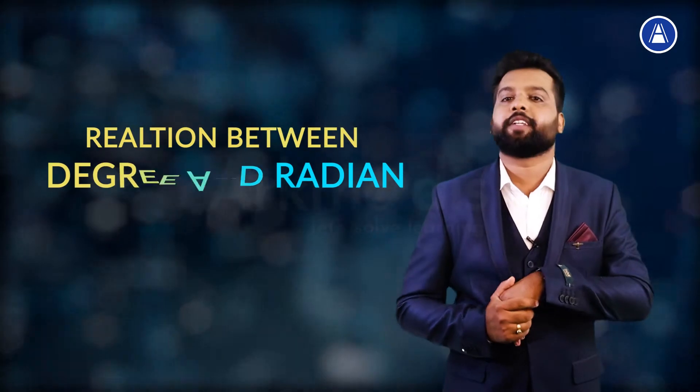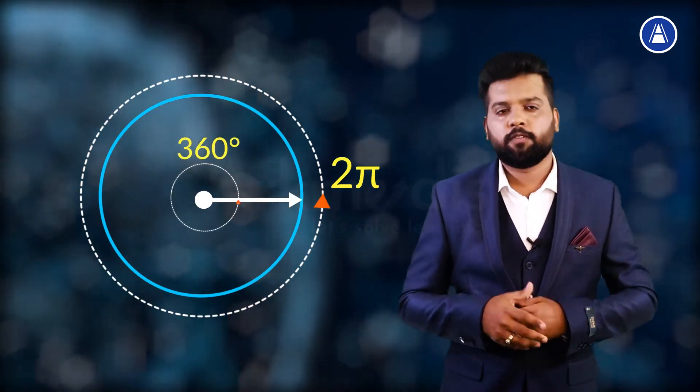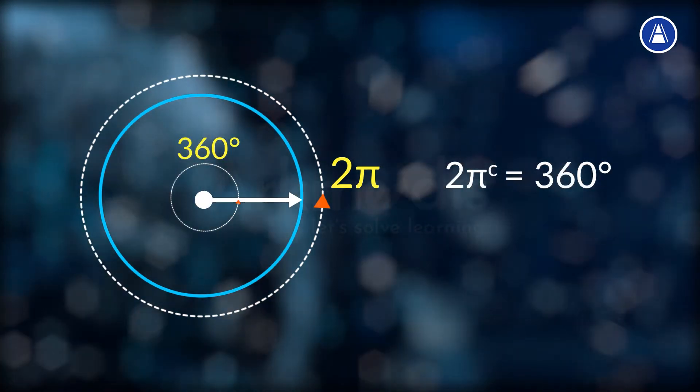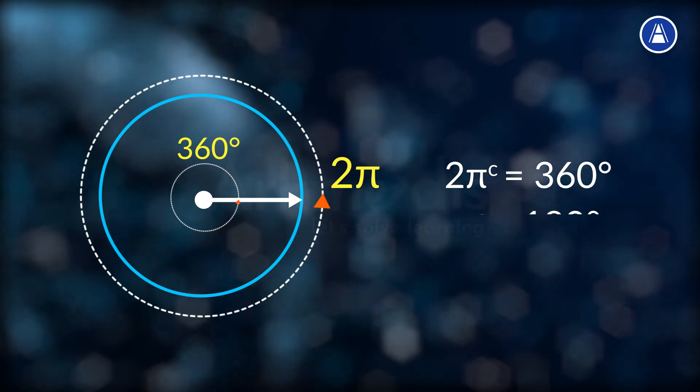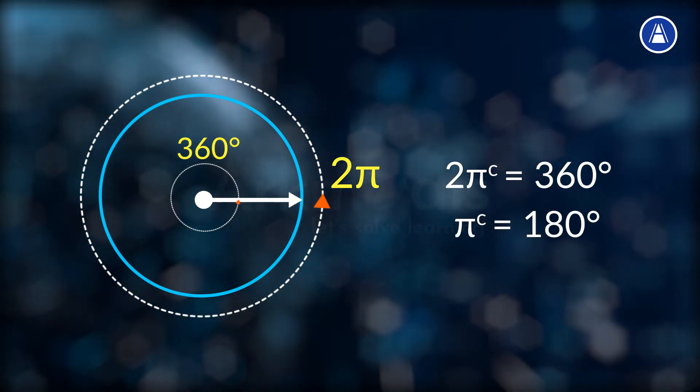Similarly, we will find out the relation between degree and radian. We know a circle subtends an angle whose radian measure is 2π and its degree measure is 360°. This means 2π radians equals 360 degrees, or π radians equals 180 degrees. So this is the relation between degree and radian, and this enables us to express a radian measure in terms of degree measure and vice versa.